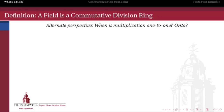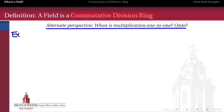The definition of a field is that a field is a commutative division ring — we have commutative addition, commutative multiplication, and inverses for both operations, so we can divide by everything except zero. But let's take a different perspective on it: let's think about what field means from the point of view of looking at multiplication maps. Let's think about the integers for a second and consider the function f(n) = 3n, which we'll call the multiplication by 3 function.